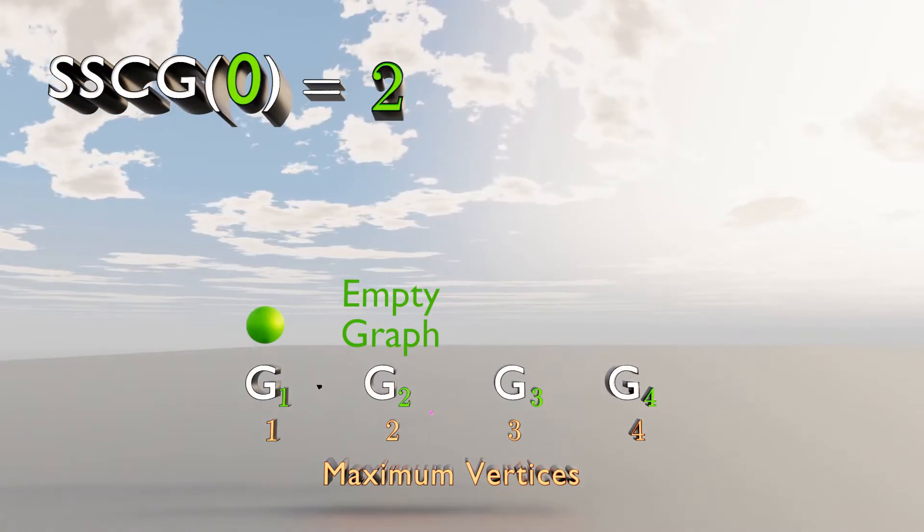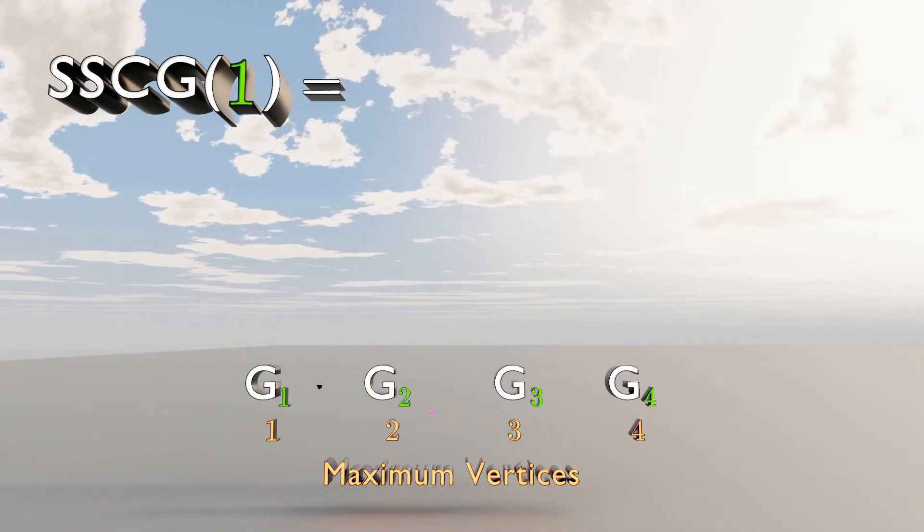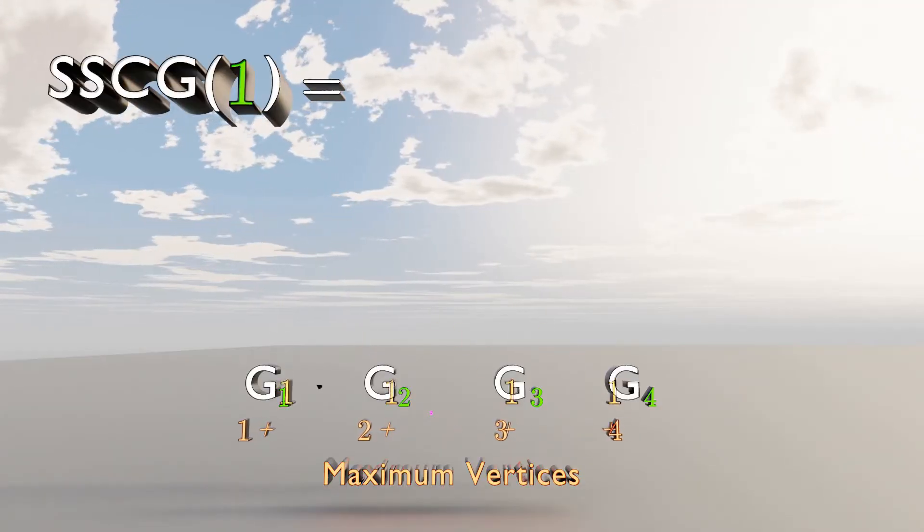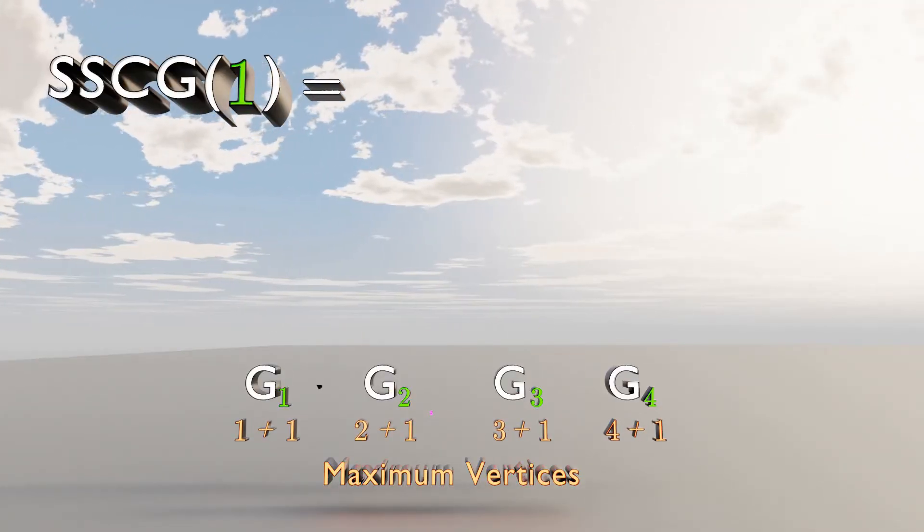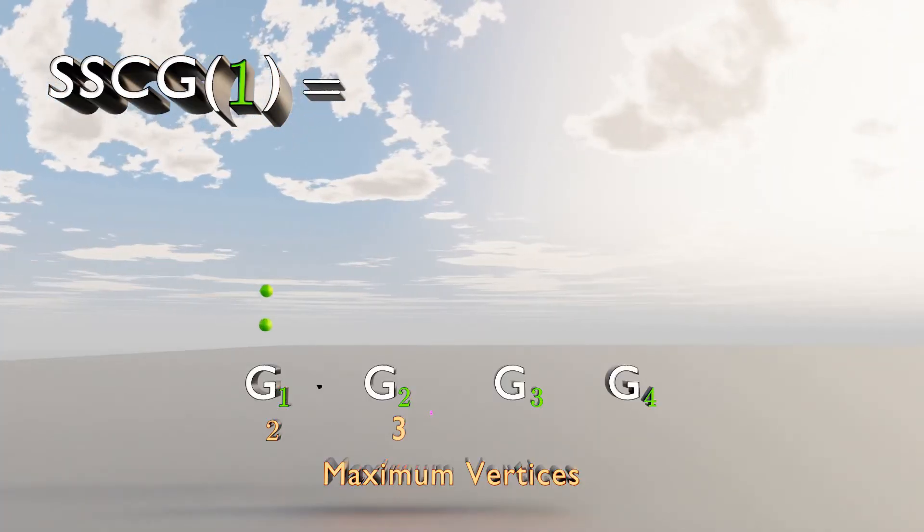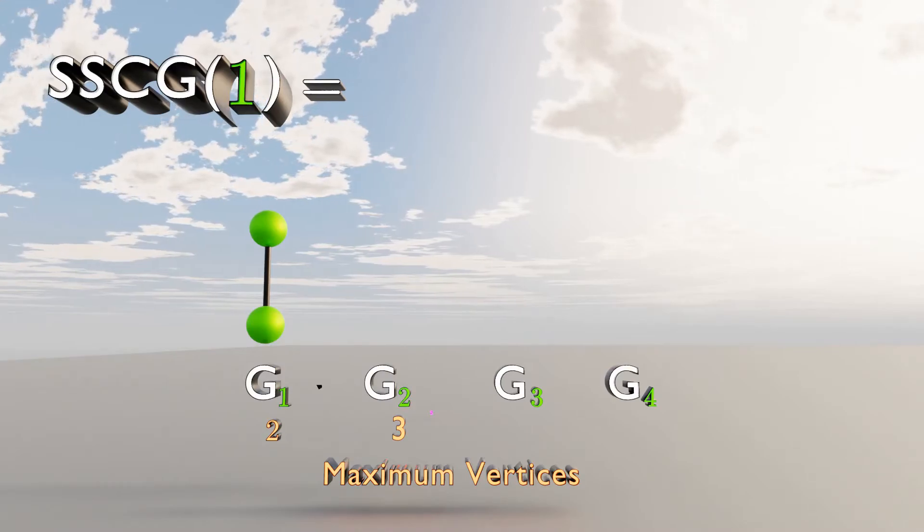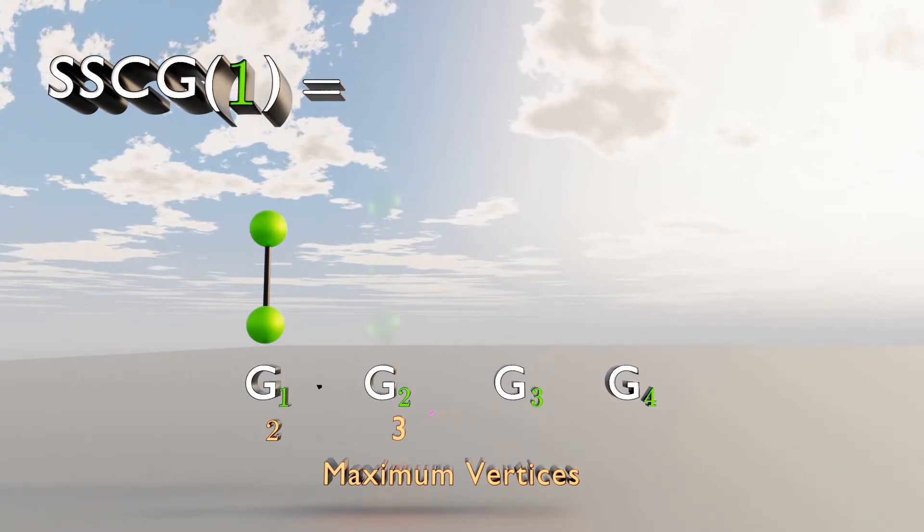Now let's try SSCG1. Each graph can have plus 1 vertices. Graph number 1 can have 2 vertices connected with an edge. Graph number 2 can have 3 separate vertices.